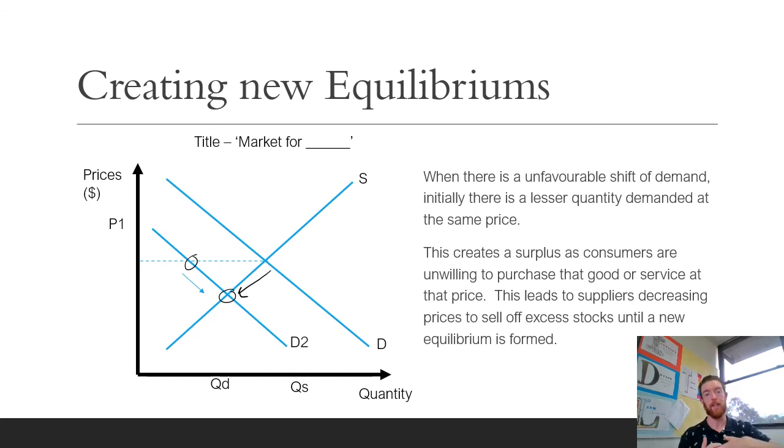If we look at a change in supply, a favorable shift in supply means there's more being supplied at the same price. Only the original amount is still being demanded which creates an oversupply or a surplus. This starts decreasing prices until a new equilibrium is formed at a slightly lower price but a higher quantity demanded overall. You can just kind of tell by putting that dotted line across at the price, seeing what's happening, and then explaining what happens to get to that new equilibrium price.